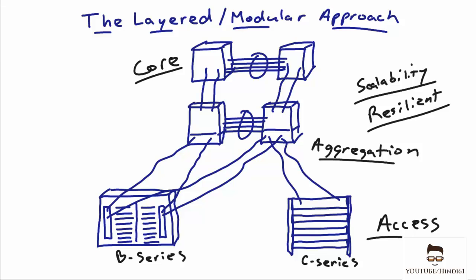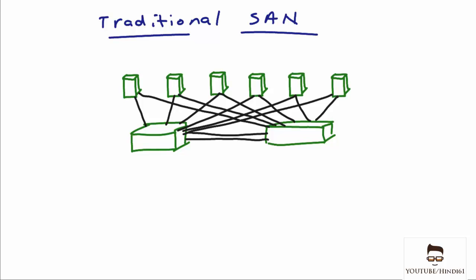If you're familiar with other design classes — maybe even the CCDA training — and you know the three-layer concept of core, aggregation, and access, you'll feel comfortable with the modular approach used in the data center because these three layers exist here as well. In the storage area network, you often find a small number of switches in a single layer making redundant connections out to the servers providing storage. This is a pretty inexpensive and easy way to manage your environment.